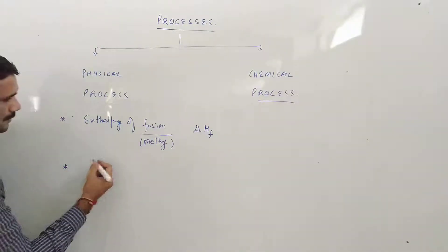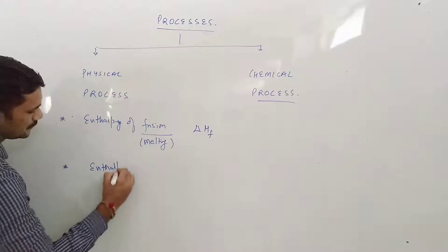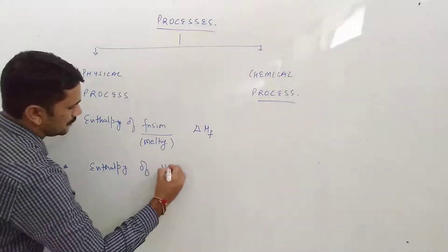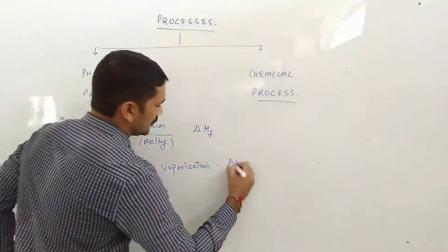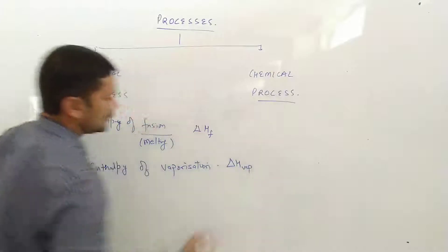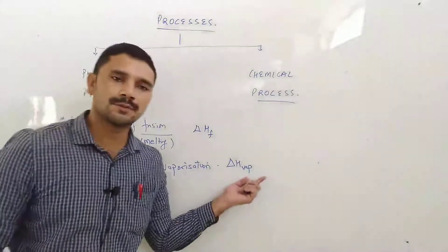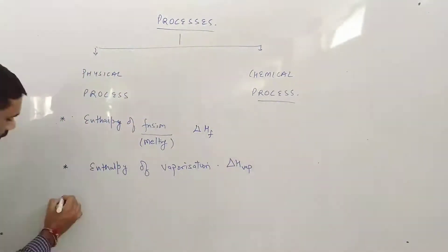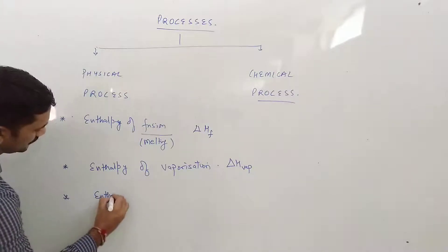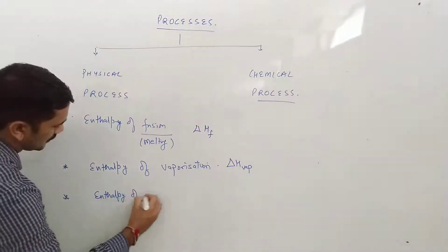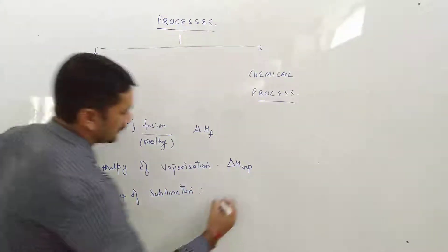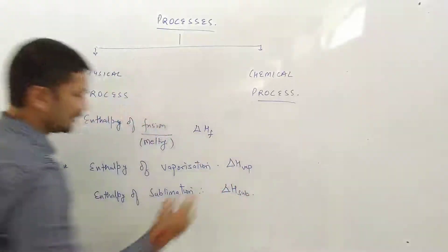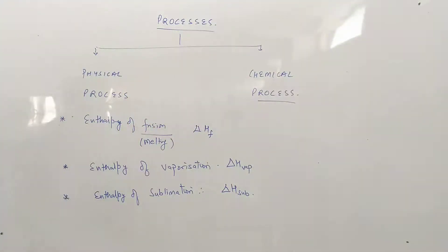Next kya tha? Agar kahin par vaporization ho raha hai to wahan par jo enthalpy change hoga, usse kya bola jaega? That is called enthalpy of vaporization, aur isko represent karte hain delta H_VAP se — VAP ka matlab vaporization. Phir aati hai third type — enthalpy of sublimation. Agar kisi process mein sublimation dekhne ko mil raha hai, koi solid jo hai wo directly convert ho raha hai gas mein, to usse hum bolte hain enthalpy of sublimation — that is delta H_sublimation.